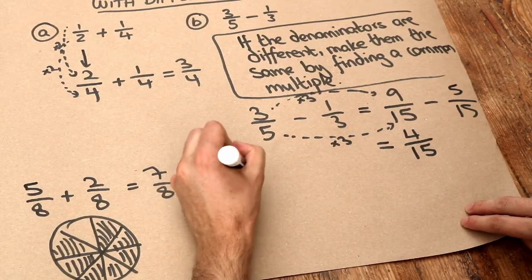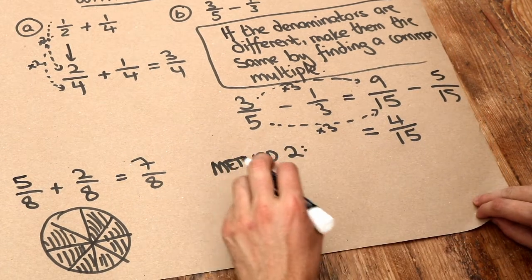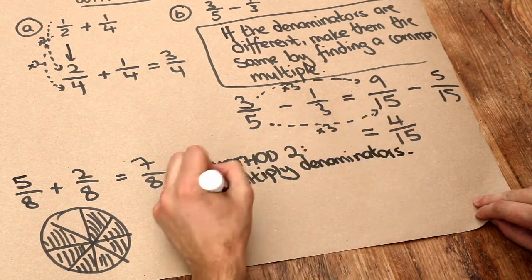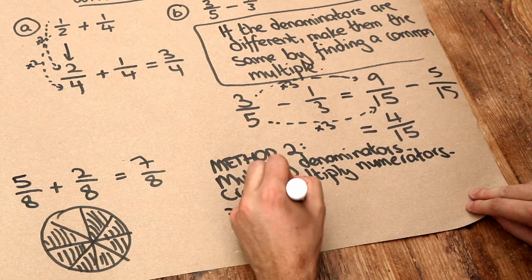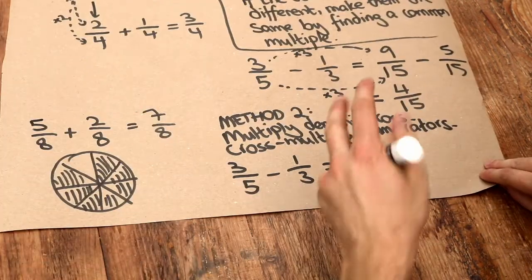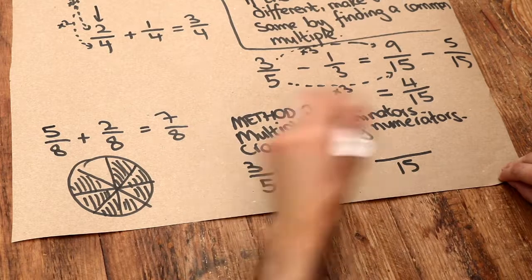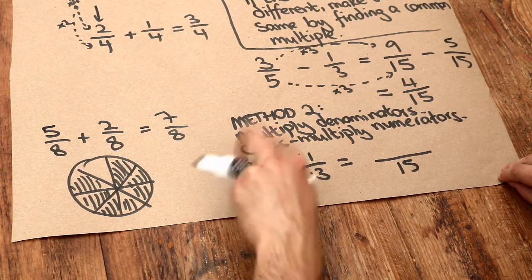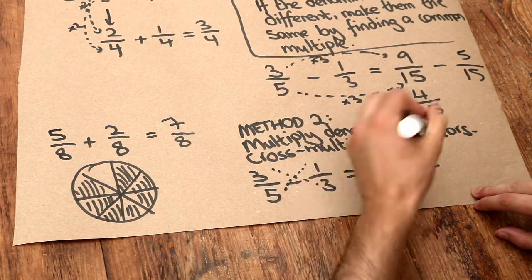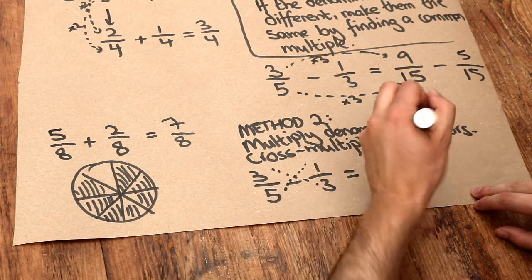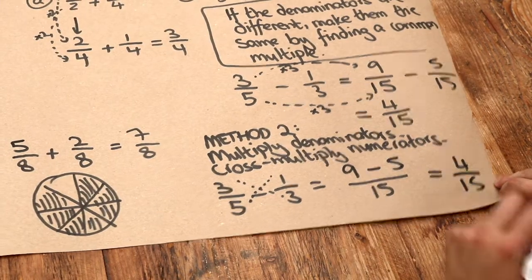There's a second method which you might like which involves a bit less thinking but doesn't always give you a fraction in its simplest form. What you could do is multiply the denominators and you cross multiply, which I'll explain in a second, the numerators. So for 3/5 minus 1/3 again we multiply the denominators. 5 times 3 is 15. And then the numerators we do something called cross multiplying. That's to multiply in a kind of cross type fashion, like this. So that 3 gets multiplied by the 3 which is 9. Then we've got the minus in the middle. And then that 1 gets multiplied by the 5, that's 5. And then 9 minus 5 is 4. So we get 4/15. So if you prefer that method you're very welcome to use it.